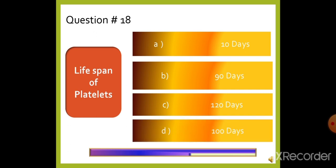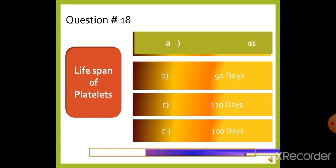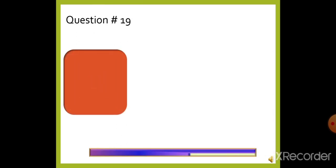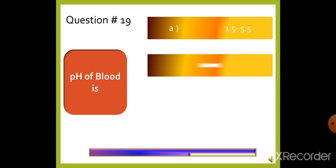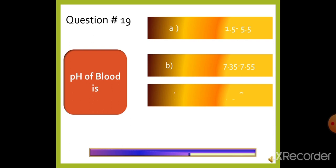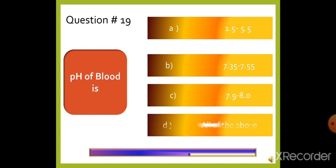Question 19: The pH of blood is — option A: 1.5 to 5.5, option B: 7.35 to 7.55, option C: 7.9 to 8.0, or option D: All of the above. The right answer is option B, 7.35 to 7.55.